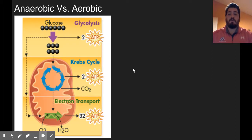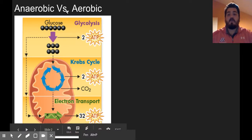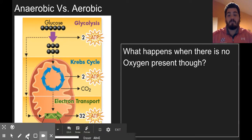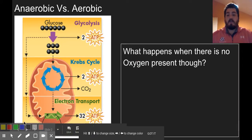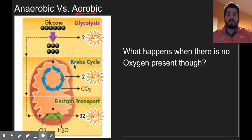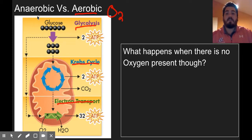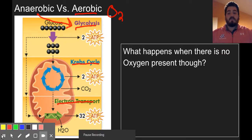As we talk about cell respiration and finish it up, it's important that we talk about anaerobic versus aerobic respiration. We've talked about the two types of respiration before. Aerobic respiration is respiration that requires oxygen, and this takes place in the Krebs cycle and the electron transport chain — they both require oxygen gas. Whereas glycolysis is anaerobic respiration, which means it can happen without the presence of oxygen.